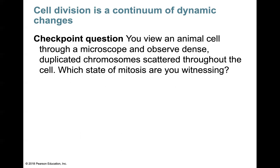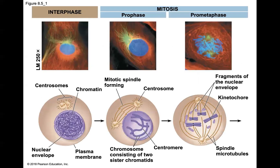Checkpoint question: You view an animal cell through a microscope and observe dense, duplicated chromosomes scattered throughout the cell. What stage of mitosis are you witnessing?